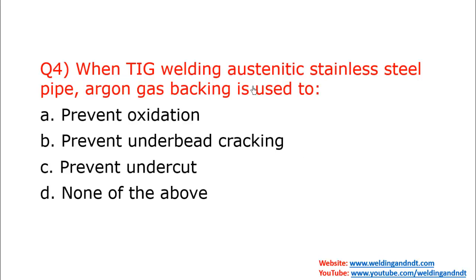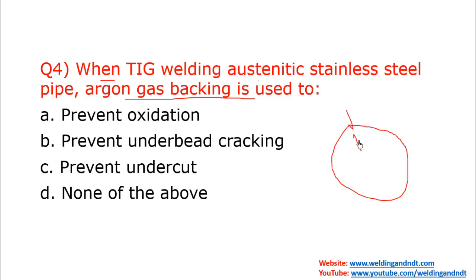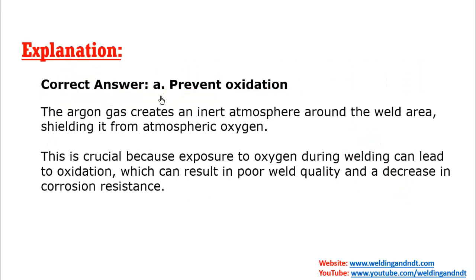Question number four: when TIG welding austenitic stainless steel pipe, argon gas backing is used. Backing of argon gas means — suppose this is a pipe, austenitic stainless steel pipe, and you are welding from one side — argon gas will be supplied from the back side to prevent oxidation. This argon gas will separate the molten weld pool from atmospheric oxygen. The answer is: prevent oxidation. The argon gas creates an inert atmosphere around the weld area, shielding it from atmospheric oxygen so that oxidation will not happen.